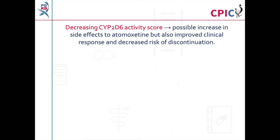Patients with lower CYP2D6 activity scores may show increased atomoxetine-induced side effects. However, they may also show an improved clinical response and be at a decreased risk of discontinuing atomoxetine therapy compared to patients with a higher CYP2D6 activity score. To assist with atomoxetine dosing, this guideline provides information about plasma drug concentration testing as a way to assess atomoxetine exposure, and provides specific recommendations for the use of atomoxetine in children and adults.